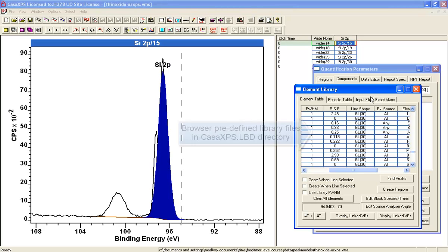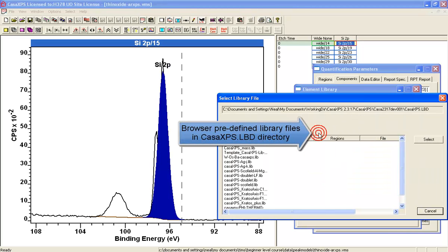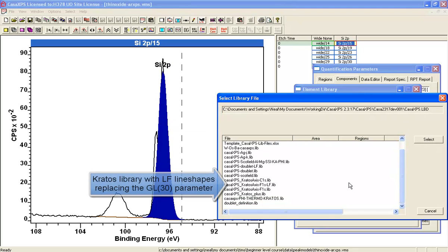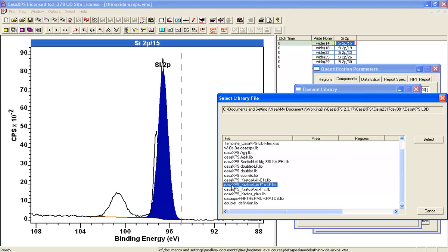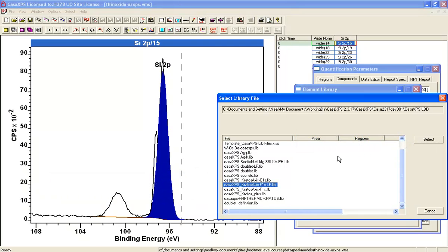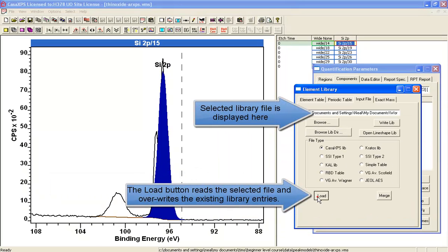So what I'm going to do now is load an alternative element library, and there's a directory CASAXVS.LBD that can be populated with different forms of element libraries depending on the application. In this case, what I'm going to use is the Kratos sensitivity factors relative to the Fluorine 1S, and also it'll have an LF line shape rather than a GL line shape, so I'm going to select that one and load it.